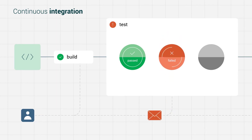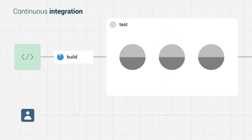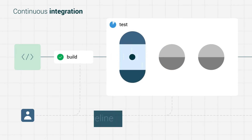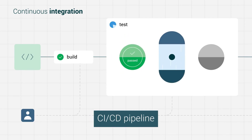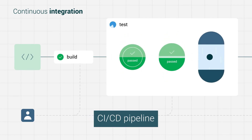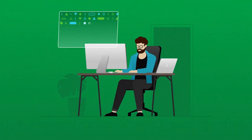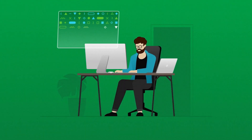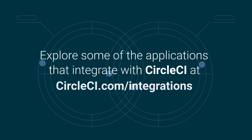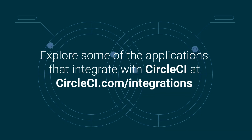Organizations can reduce the costs associated with implementing and maintaining a testing process by integrating functional and non-functional tests into a continuous integration and continuous deployment pipeline. To learn more about testing and how to integrate good testing practices with their continuous integration tools, explore some of the applications that integrate with CircleCI at circleci.com/integrations.